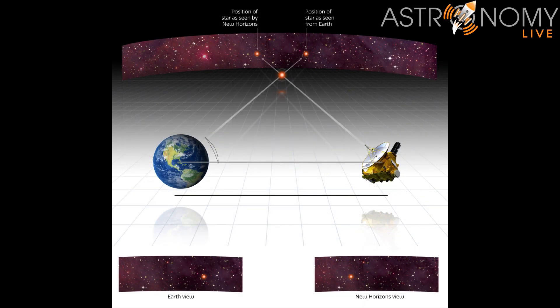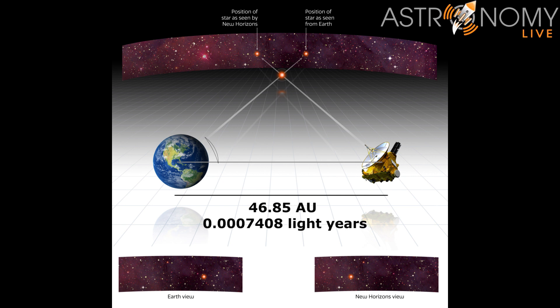Now that we've measured the parallax, let's see if we can calculate the distance to Wolf 359 using these measurements. First we need to know the distance to the New Horizons probe, which was 46.85 astronomical units at the time of the measurement, which translates to about 0.0007408 light years.